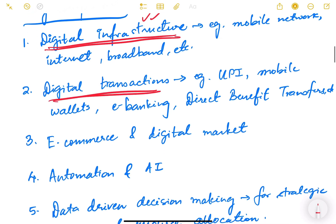The second component is digital transactions. We should have a system whereby we can have cashless transactions. Technologies such as UPI — Unified Payment Interface — mobile wallets, e-banking, and direct benefit transfers (DBT) from the government directly to the beneficiary account are the various types of digital transactions which happen through digital technology.